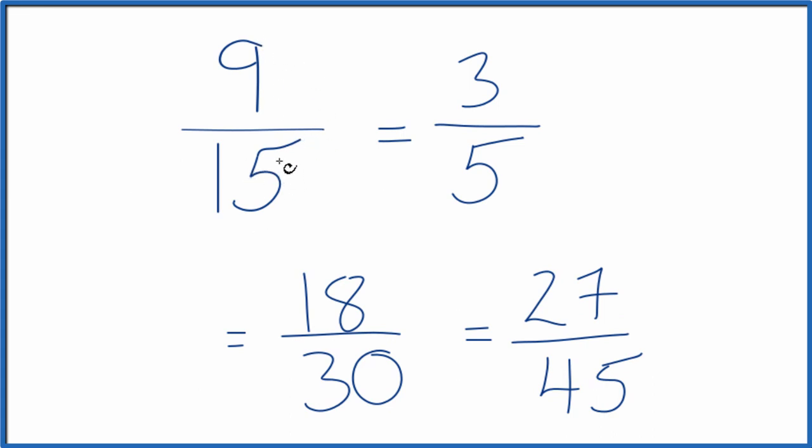And if you divide 9 by 15, 3 by 5, 18 by 30, or 27 by 45, you get the same decimal number. These are all equivalent fractions for 9/15.